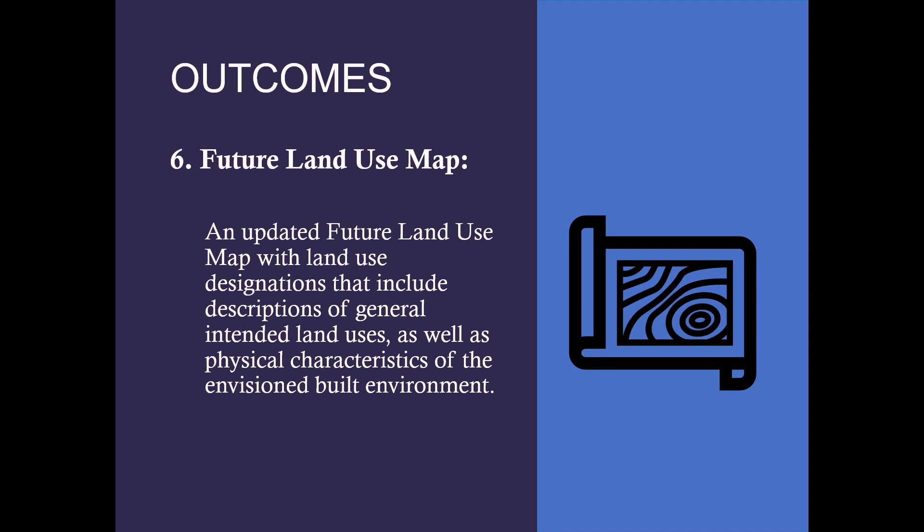Staff would also like an updated future land use map. The most important reason is ensuring the map can accommodate anticipated growth and housing needs. Additionally, there are inconsistent land use designations and descriptions throughout all the different district plans — no consistent naming conventions and varying descriptions. Some plans have land use designations with no descriptions, making the intended uses unclear. The update would create a consistent list of land use designations and associated descriptions, adding clarity and consistency across all plans.